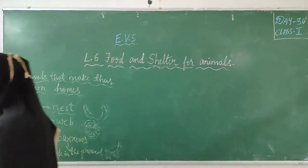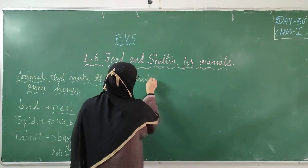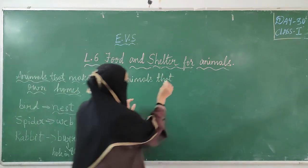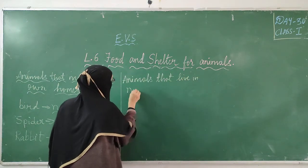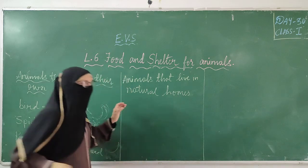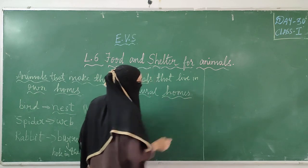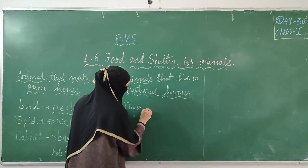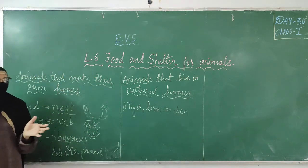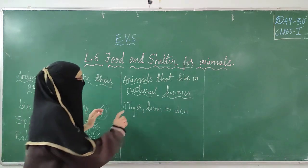Animals that live in natural homes. What are natural homes? Neither we are making them nor are these animals making them. Take tiger and lion — where do they live? They live in a den. A den is the space between the rocks. No one makes it. They find their own home and live there. It is a natural home.